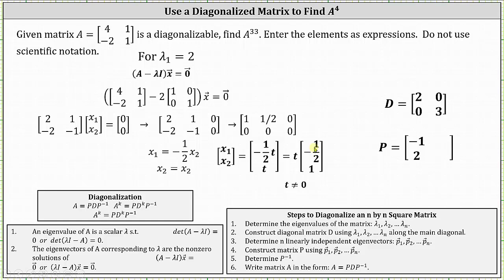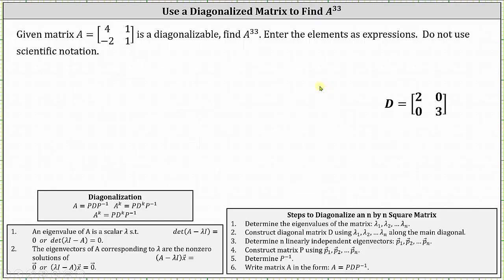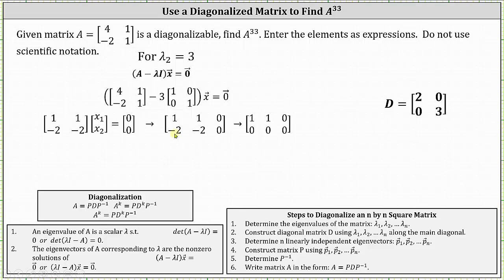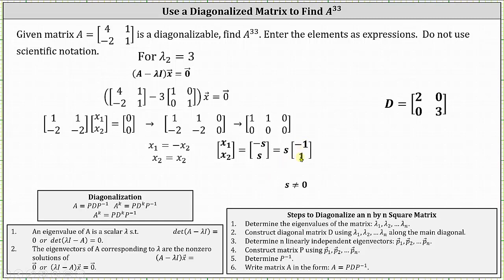Because we can use any scalar multiple of the vector negative one half, one, matrix P is not unique. Now let's find an eigenvector corresponding to lambda sub two equals three. Going through the same process — setting up an augmented matrix and reducing to row echelon form — we get x one equals negative x two. Again, x two is a free variable. Letting x two equal s, all eigenvectors are in the form s times the vector negative one, one. We let s equal one and use the eigenvector negative one, one, so the second column of matrix P is negative one, one.